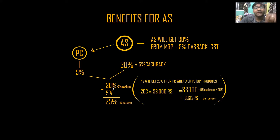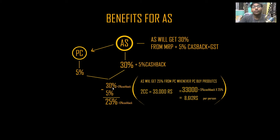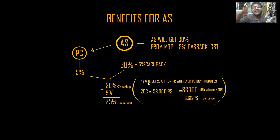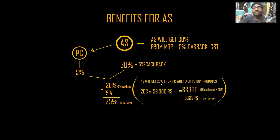So the calculation is: AS gets 30% plus 5% cashback. The person below — the PC — gets only 5%. So 30% minus 5% equals 25%, plus 5% cashback. Means, if you buy any product through someone below you, you earn 25% plus 5% cashback on their purchase. AS will get 25% from the PC whenever the preferred customer buys products.